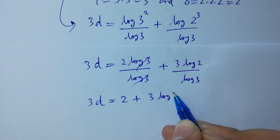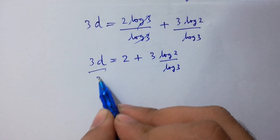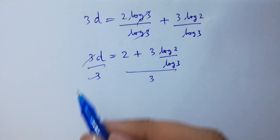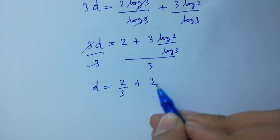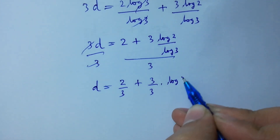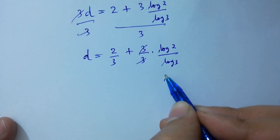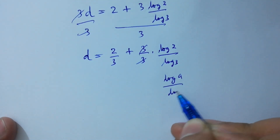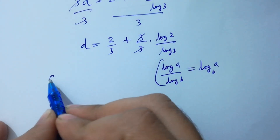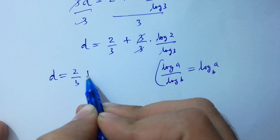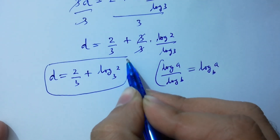Divide by 3 on both sides; 3 and 3 will be cancelled. So d equals 2 over 3 plus log 2 over log 3. Since log a over log b equals log a to the base b, d equals 2 over 3 plus log 2 to the base 3. That is the value of d.